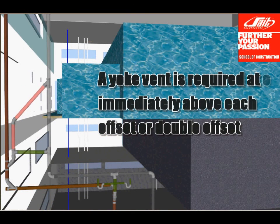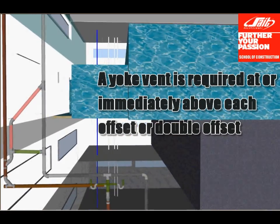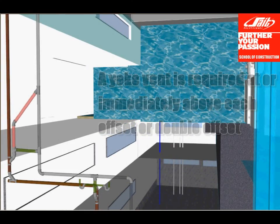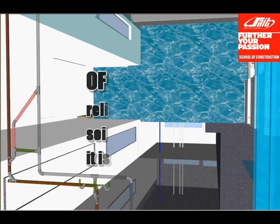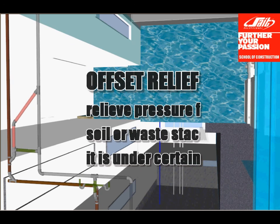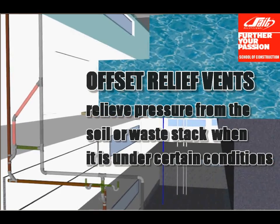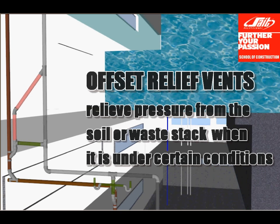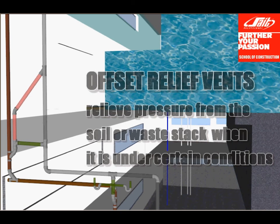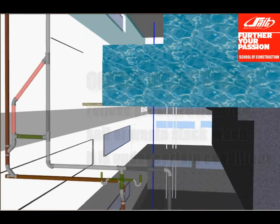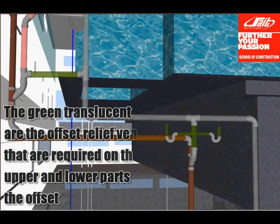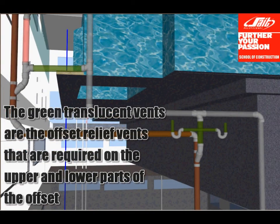A yoke vent is required at or immediately above each offset or double offset. Offset relief vents relieve pressure from the soil or waste stack when it is under certain conditions. The green translucent vents are the offset relief vents that are required on the upper and lower parts of the offset.